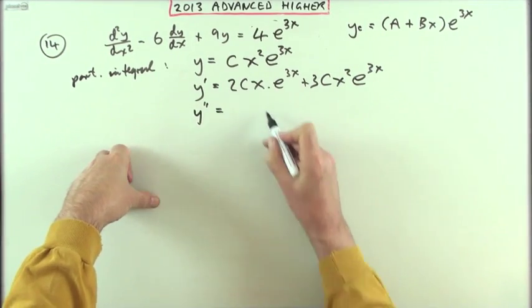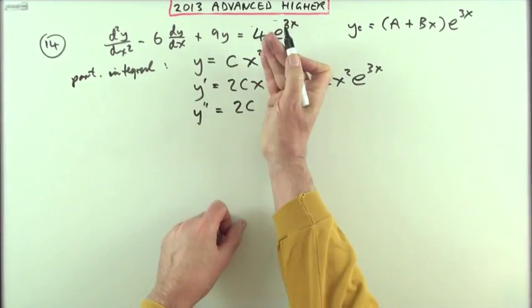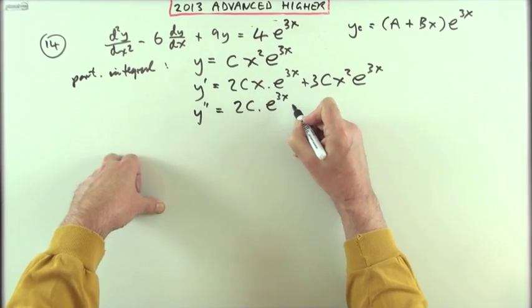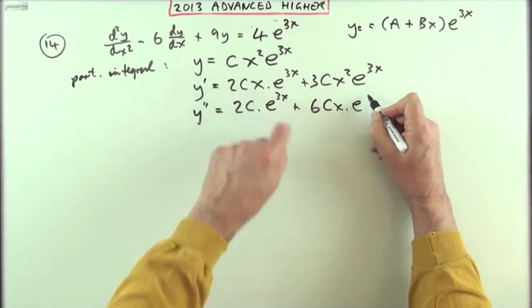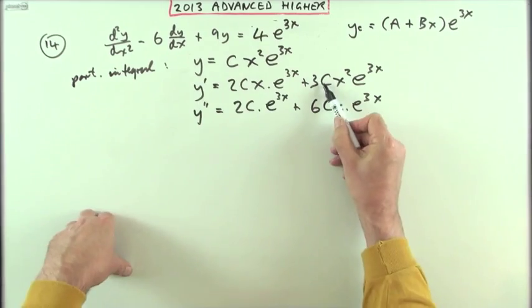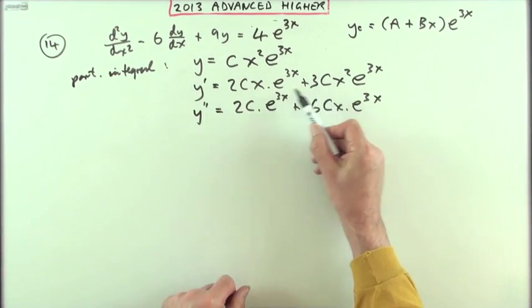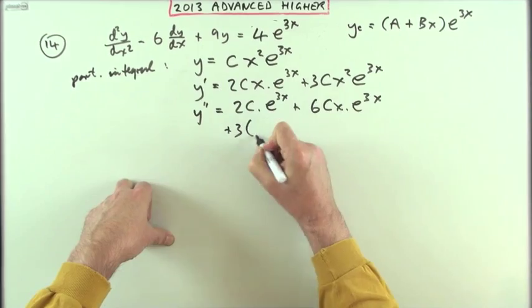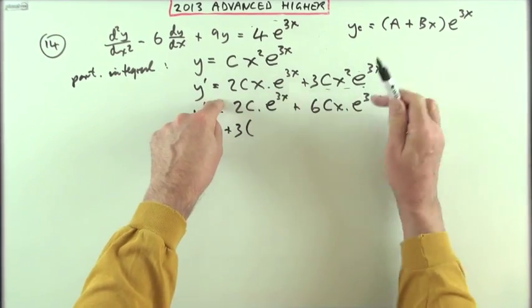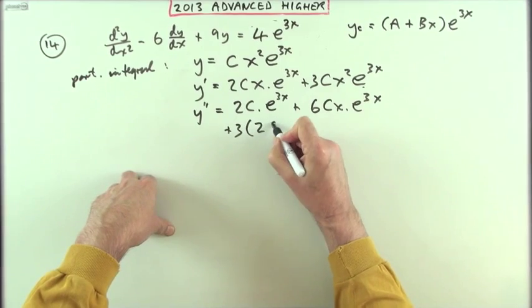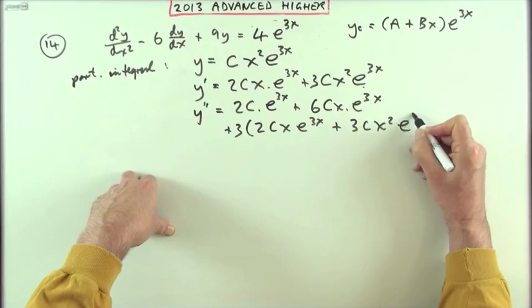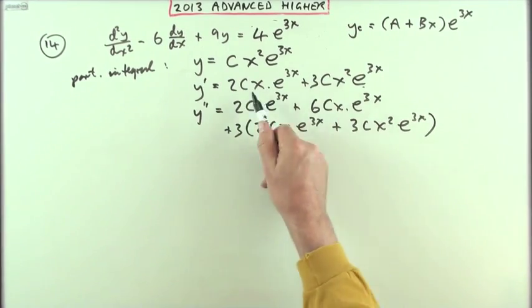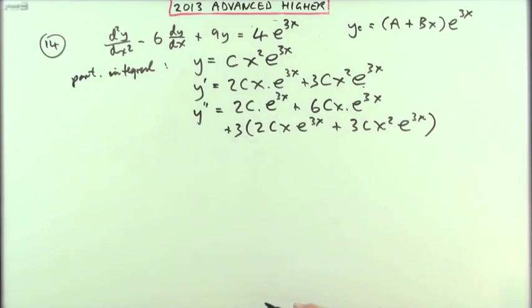Differentiate it again. This part here will be 2Ce^(3x) + 6Cxe^(3x). That's just what I started with, so that'll be 3 times what this produced, plus 3 times 2Cxe^(3x) + 3Cx²e^(3x). Or you could just differentiate both terms - they're both going to split into two parts. The important thing is I want to add up all the bits I've got.